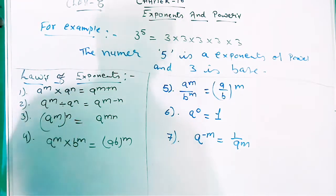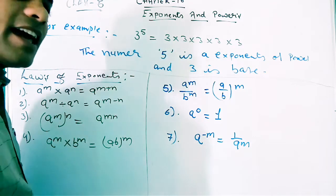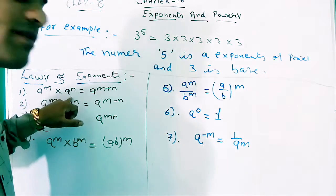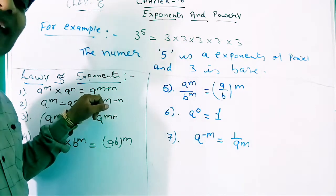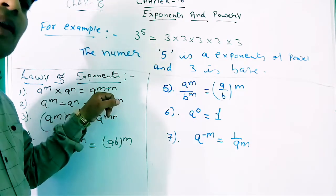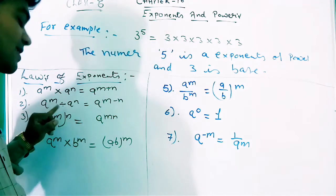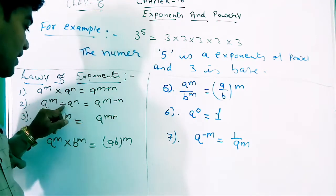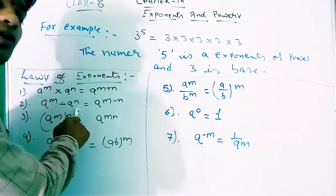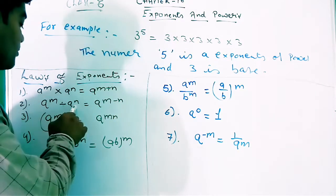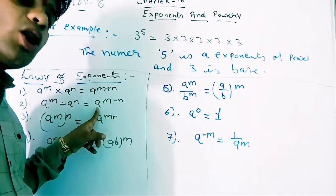First law: a^m multiplied by a^n is equal to a^(m+n). When the base is the same and powers are different, the base becomes common and the powers are added. Similarly, when the base is divided, the base remains the same and the exponents are subtracted — powers are different, so powers are subtracted and base becomes common.